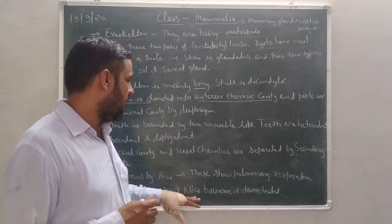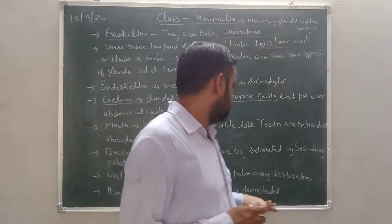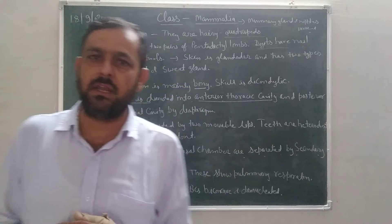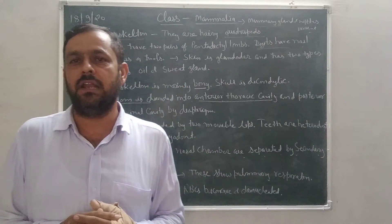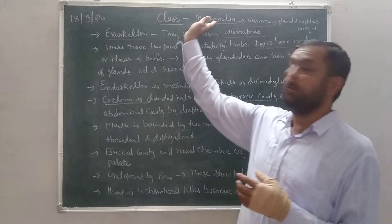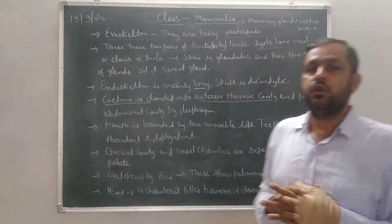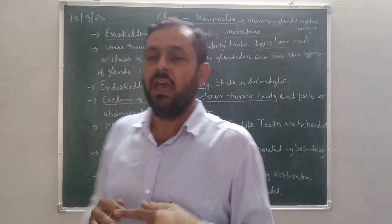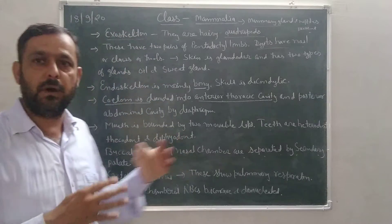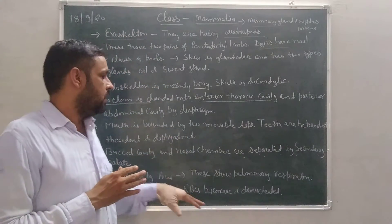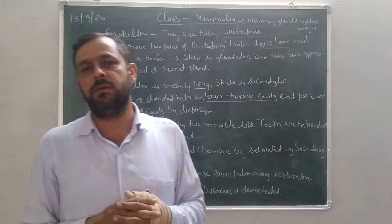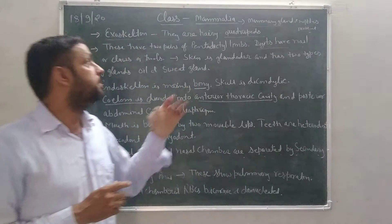The heart is four-chambered. RBCs are biconcave and enucleated. However, camel and llama are two animals of Mammalia which have nucleated RBC. Except camel and llama, all members of Mammalia have enucleated, meaning nucleus-less, RBC.